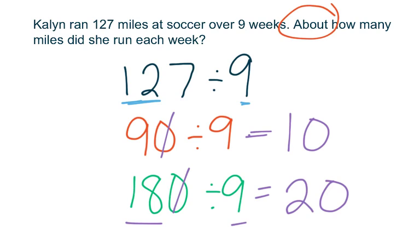So I know that my actual quotient is going to fall between 10 and 20. When I'm looking at my number of 127, it's going to be closer to my estimate of 10 because 90 as a total is closer to my total of 127. So I can kind of assume that my actual quotient is going to be about 13 because it's going to be closer to 10 than it is to 20, but it's somewhere in that range. I don't need to find exactly what it's going to be because this is an estimation question. If I have some options, I could actually divide and see which option is closest to my actual quotient, or I could just list some of my compatible facts.